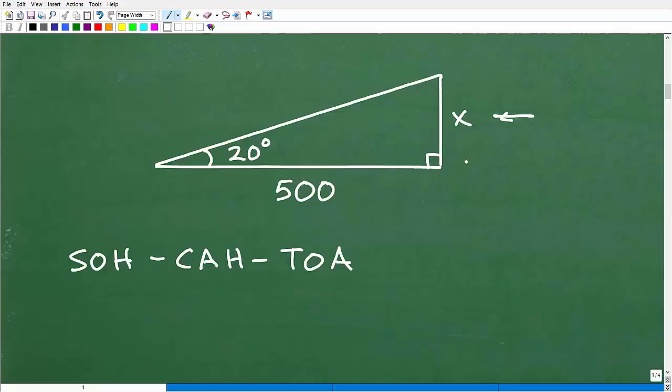All right. So we're talking about basic right triangle trigonometry. And when you're talking about basic right triangle trigonometry, you're dealing with these functions, these trigonometric ratios, sine, cosine, and tangent.